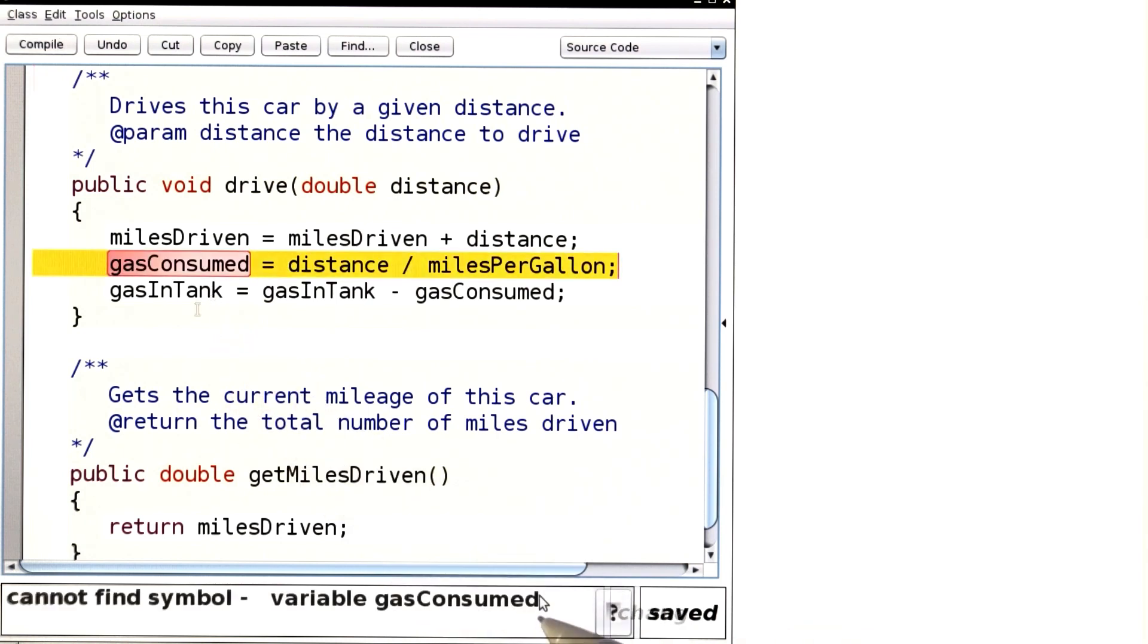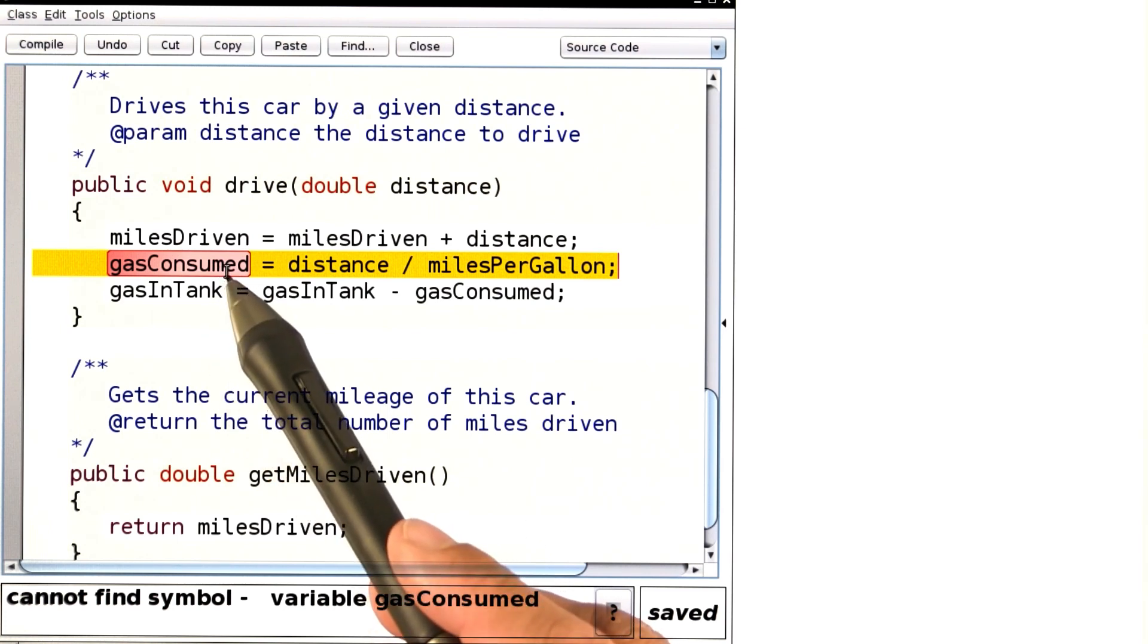And when I compile it, I get an error message where it says, cannot find symbol, variable gas consumed. That's complaining over here.